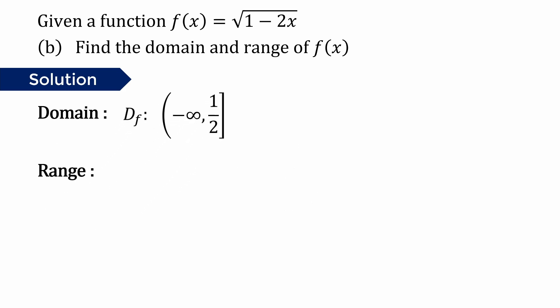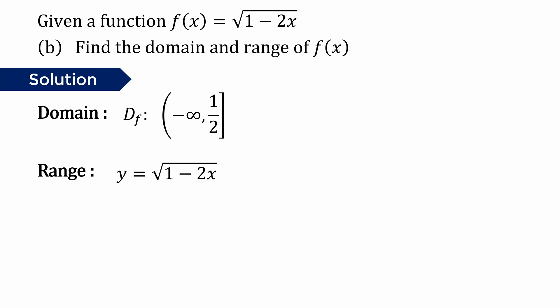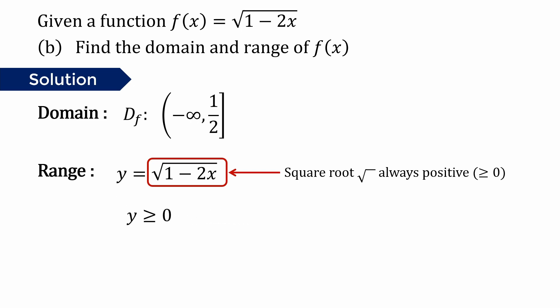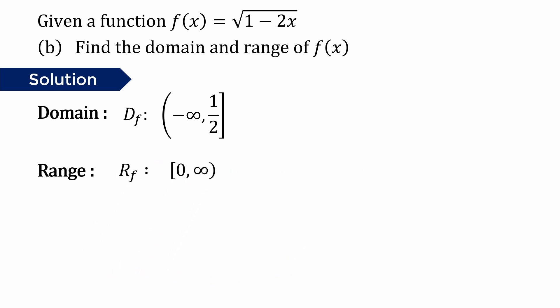So the domain of f is from negative infinity to 1/2. For the range, we determine it from the equation. The range is the value for y, and we know f(x) equals y. So y equals the square root of 1 minus 2x. Since a square root is always non-negative, the square root of 1 minus 2x is greater than or equal to 0, meaning y is greater than or equal to 0. The range of f(x) is from 0 to infinity, where 0 is included.